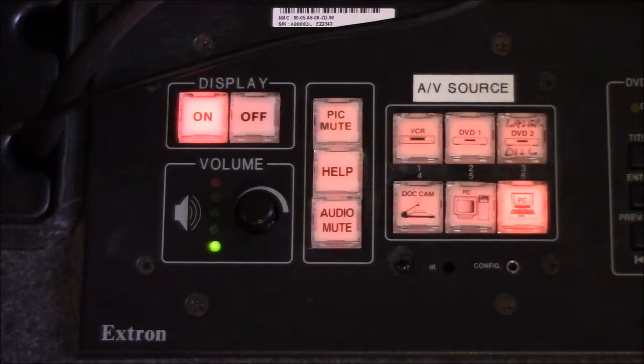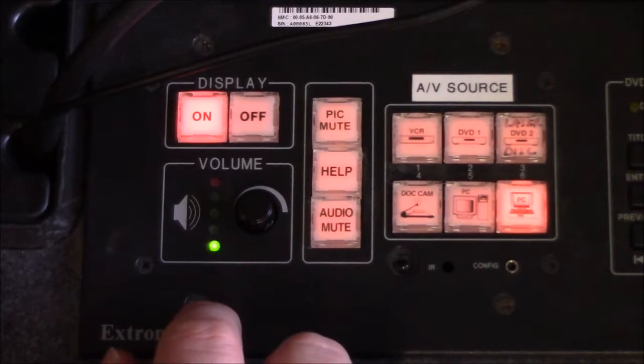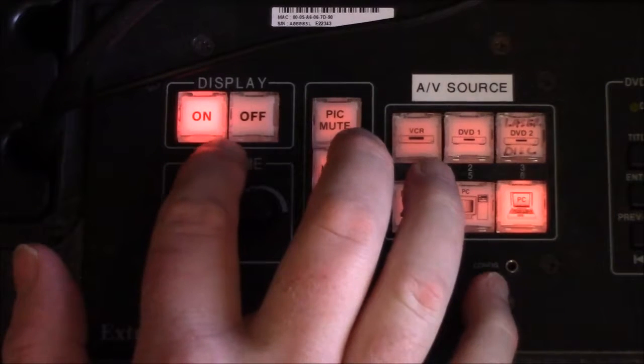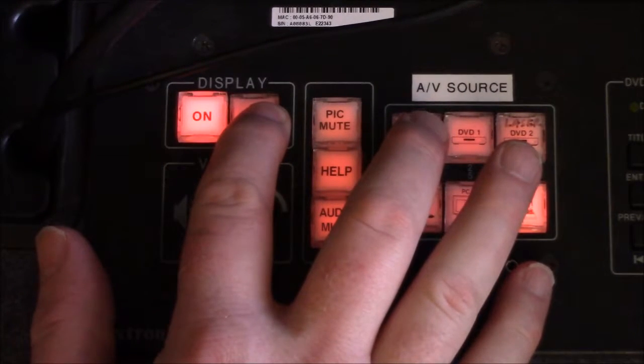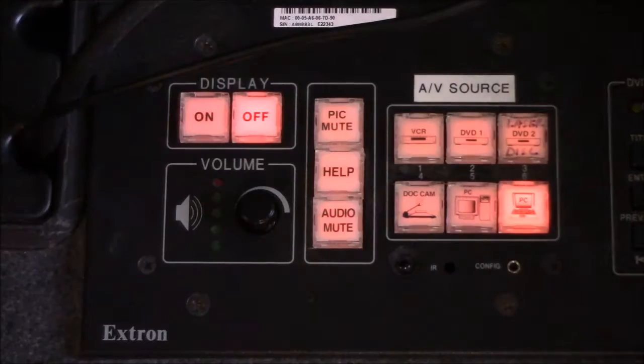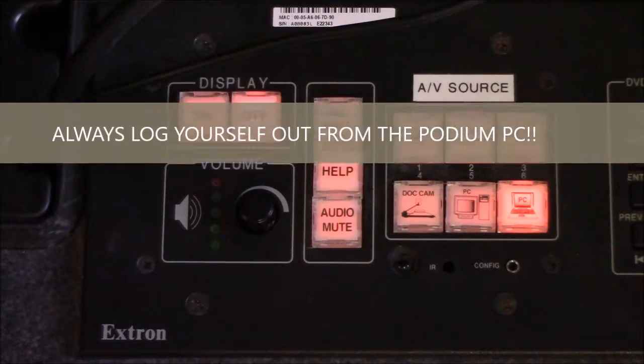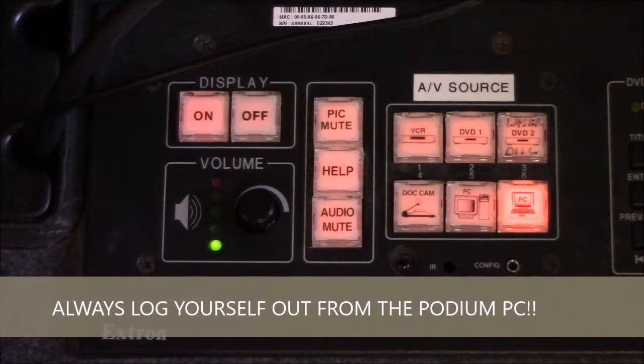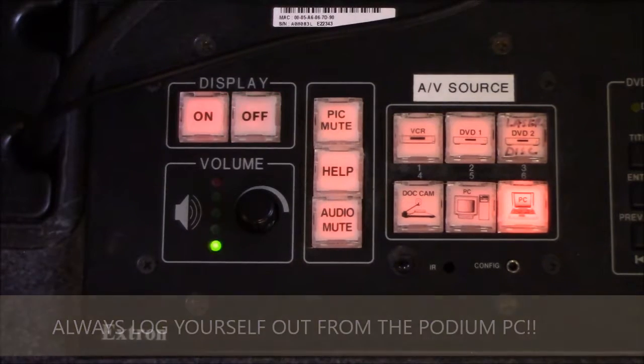When we're all done and ready to shut everything down, we'll just go back to our instructor panel here on the podium. And under display, instead of saying on, we're going to hold down off until that blinks. And once that's begun, then that will begin the process of shutting down the projector. You want to make sure you log out of the instructor PC under your login and then pick up your materials and then you're good to go.